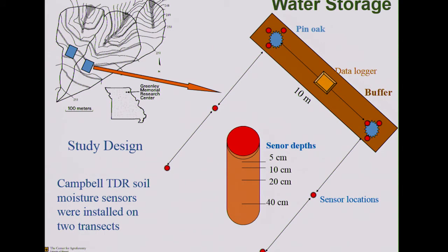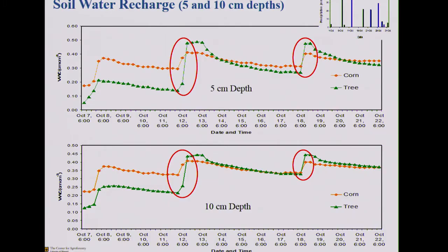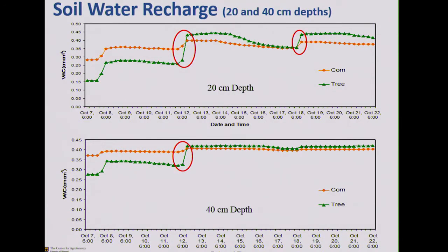We then looked at water storage capacity — how buffers can help improve water storage in soils. We placed different types of soil moisture sensors at 5, 10, 20, and 40 centimeter depths in the crop area, with four replications around the trees. After the end of the growing season in October, rain events showed that soil moisture rose much higher in agroforestry areas compared to corn areas, particularly from October 11th onward. All four depths showed that agroforestry areas retained more water, due to improvements in soil physical, biological, and chemical properties.